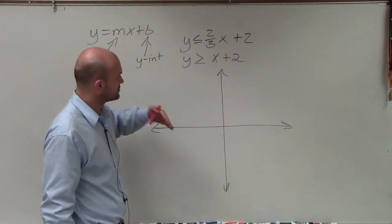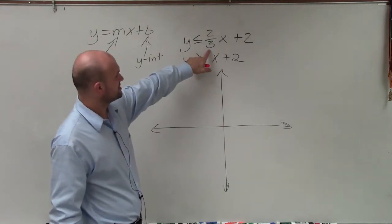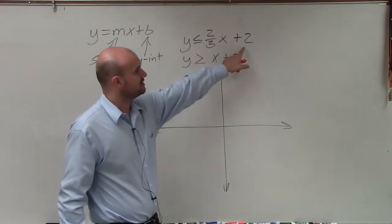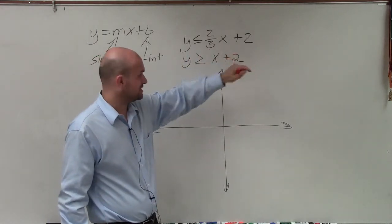We need to identify what exactly the slope is. So in this equation, you can see that the slope is going to be 2/3 and the y-intercept is 2. So let's just work on one equation at a time.